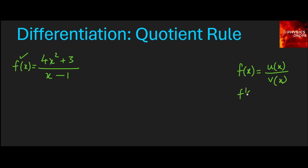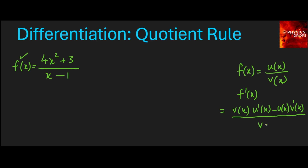Then the differentiation of f(x) is given by v(x) multiplied by the differentiation of u(x) — denoted u'(x) — minus u(x) multiplied by the differentiation of v(x). That's the numerator. The denominator becomes v(x) the whole thing squared. This is the differentiation using the quotient rule of f(x) in this form.